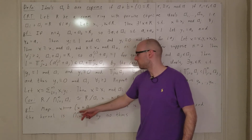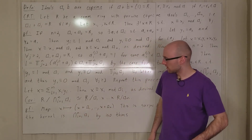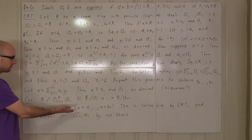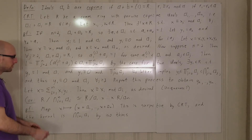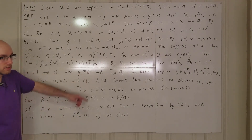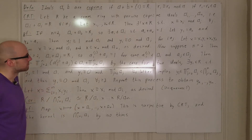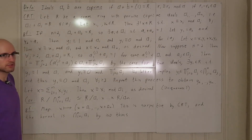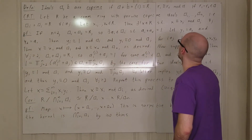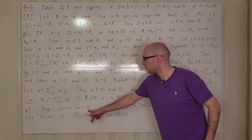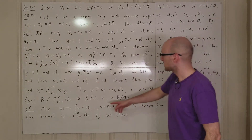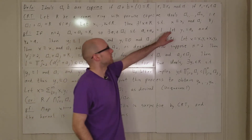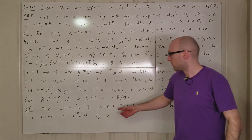This is a map from r into the product, not from the quotient. It is surjective by the Chinese Remainder Theorem: specifying x+a1 through x+an is the same as specifying elements of the quotient rings, i.e., choosing x1 through xn, and we can always find an x mapping to all of them.